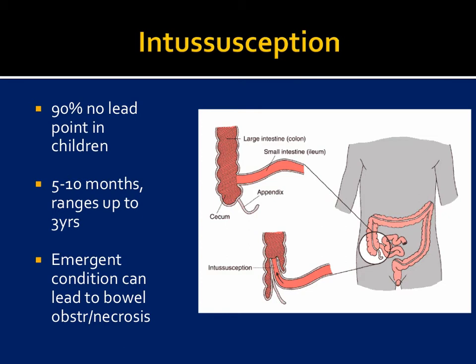Intussusception is typically caused by lymphoid hyperplasia, and in the large majority of children — up to 90% — there is no lead point. The typical age range is between 5 to 10 months up to about 3 years. If you see intussusception in a child who is 6 years or older, that is very suspicious for an underlying lead point such as lymphoma or Meckel's diverticulum.